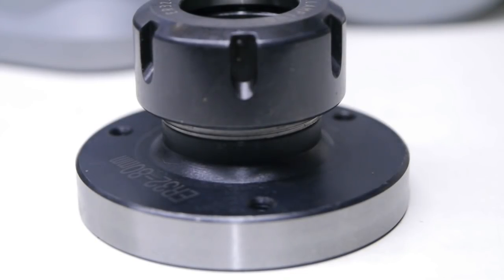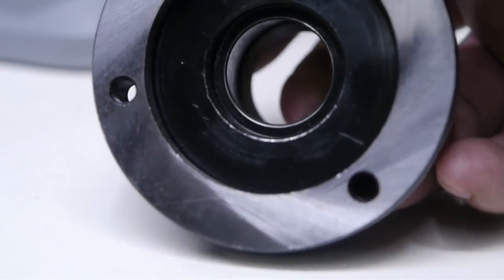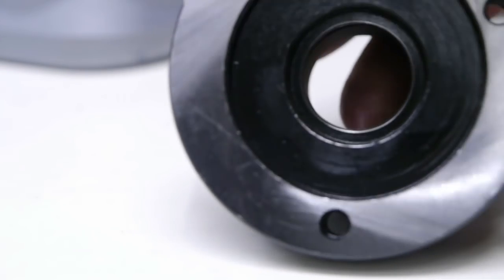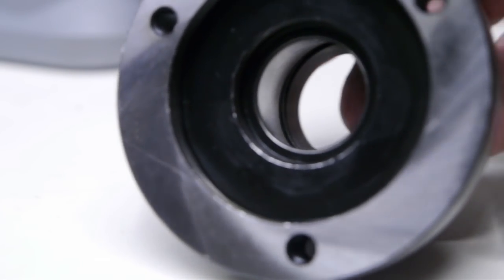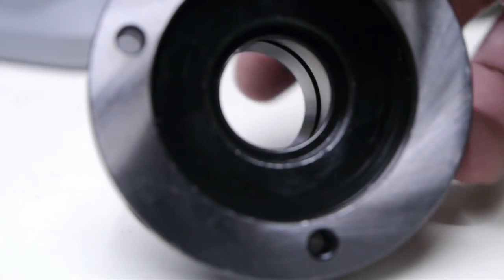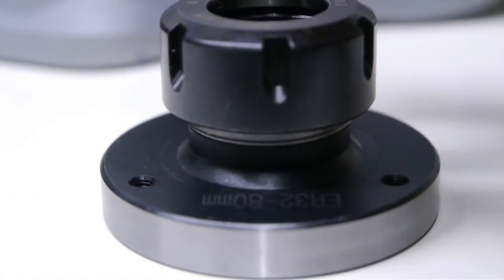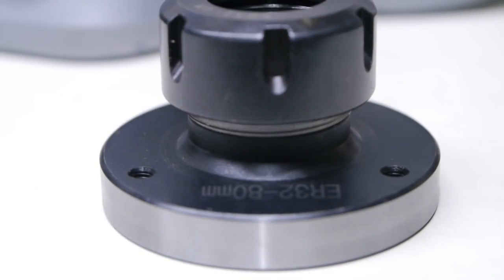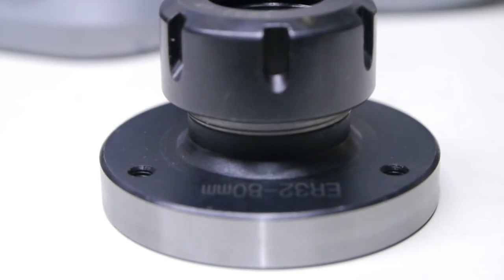It has a 3-hole bolt pattern using M6 thread. Personally I would have liked to see M8, but I'm sure it will be fine on the mini lathes. I might drill them out to 8 millimeter and then thread the back end plate, but that's something for a future video.